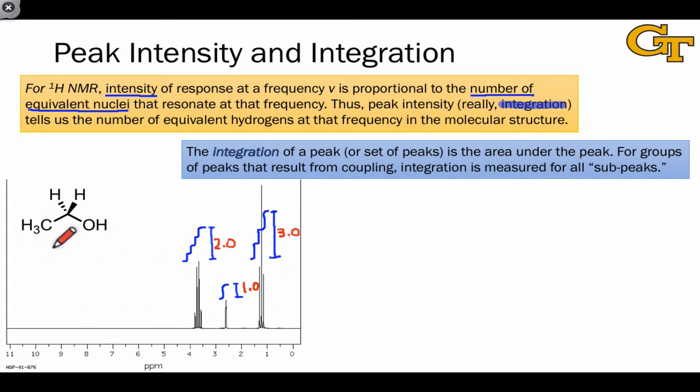The spectrum here is for the molecule ethanol. Ethanol has three distinct types of protons, the methyl group, the methylene or CH2, and the hydroxyl proton. Based on the numbers of equivalent protons in this molecule, you can probably guess which set of protons goes with which signal. The signal with integration 3 corresponds to the methyl protons, group A.